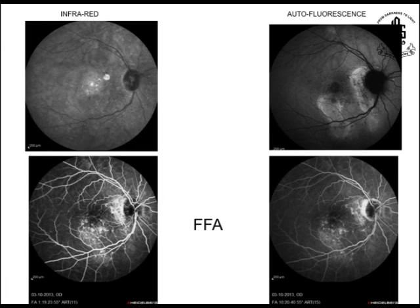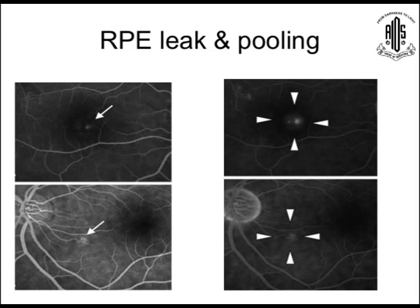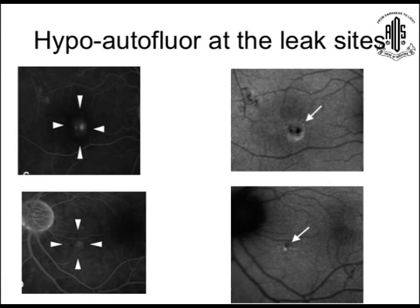A few photo examples: the infrared on the right side, and the same patient's autofluorescence photo — and the angiogram photo shows the tracks going down, and the late-phase angiogram. Another photo showing retinal pigment with a leak and pooling, and the corresponding autofluorescence shows the leakage point with hyperfluorescence.